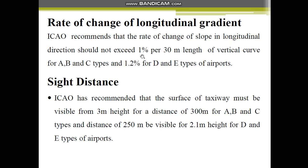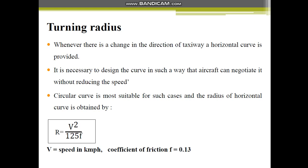The rate of change of longitudinal gradient should not exceed 1% per 30-meter length of vertical curve for Type A, B, and C airports, and 1.2% for Type D and E airports. Regarding side distance: ICAO has recommended that the surface of the taxiway must be visible from a 3-meter height for a distance of 300 meters for Type A, B, and C airports, and 250 meters visible from a 2.1-meter height for Type D and E airports.